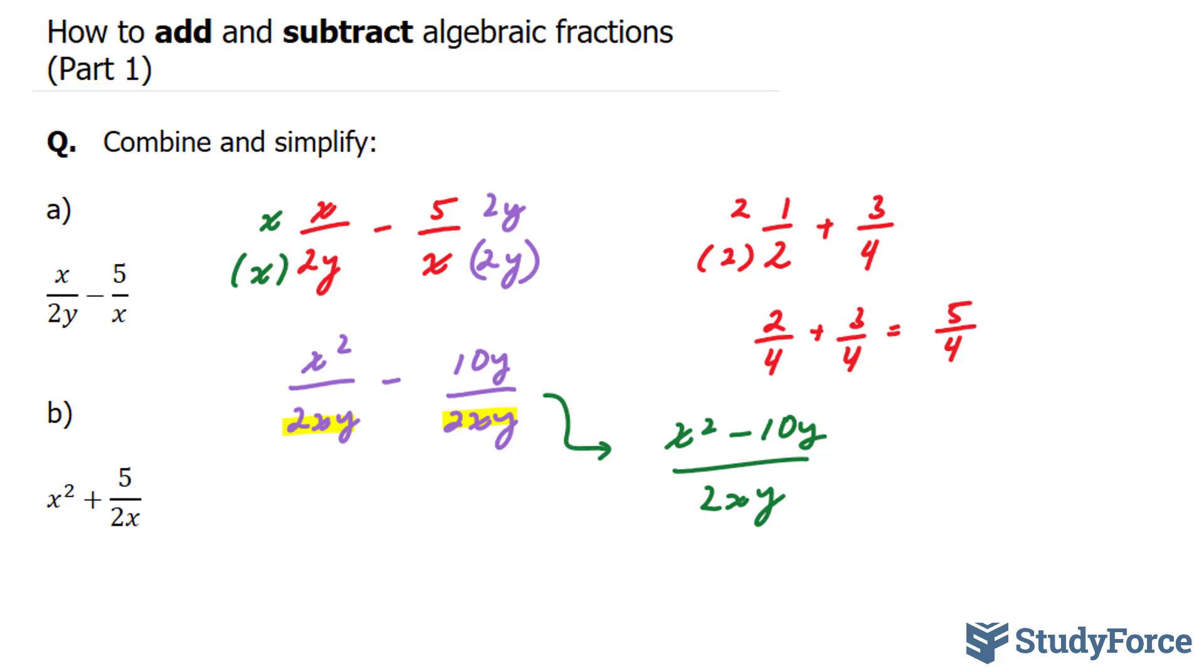Before we move on to b, another way that you could tackle this question is to multiply the denominators from the get-go and cross-multiply the denominators with the opposite numerator.